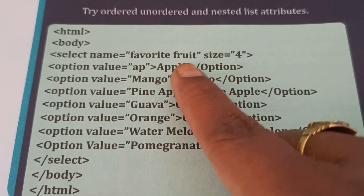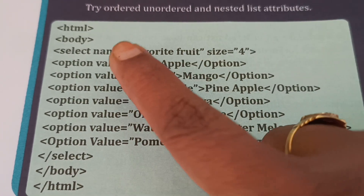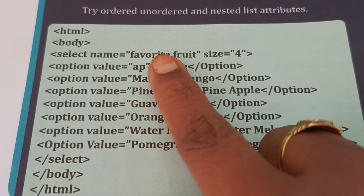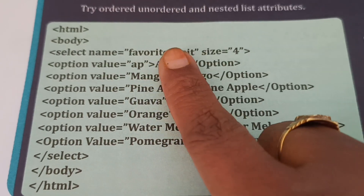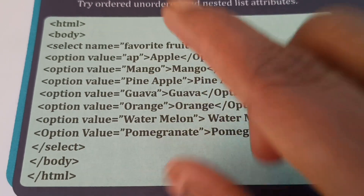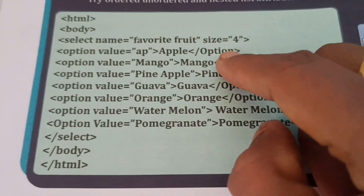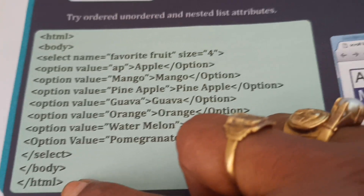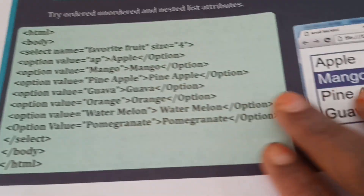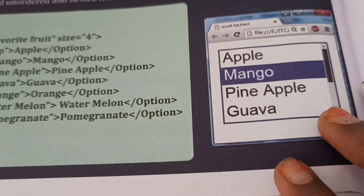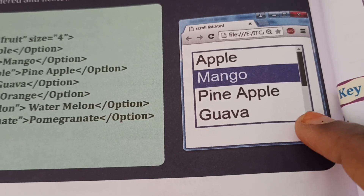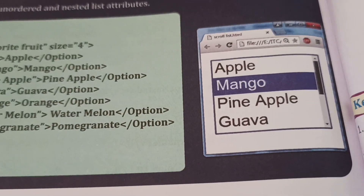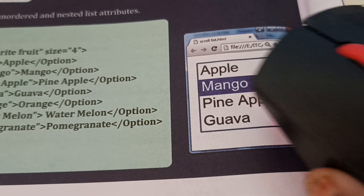This is the select name. Which name is this? This is completely fruits - favorite fruits. Size, the font size is 4. Next, body closing. This table also closing. Output completely - scrolling model. Scroll this one, this one, scrolling.